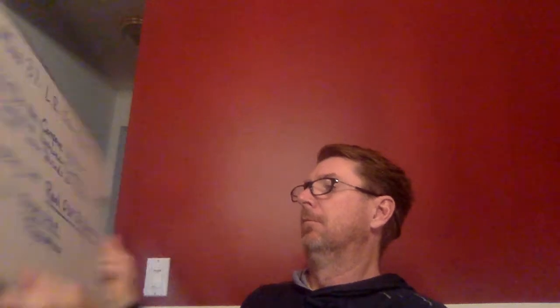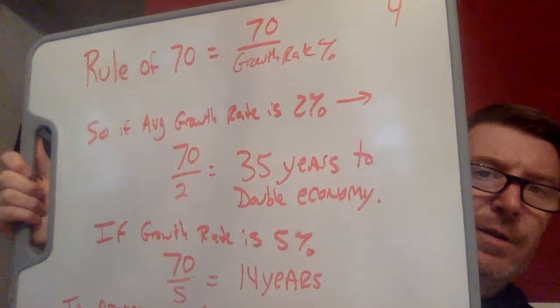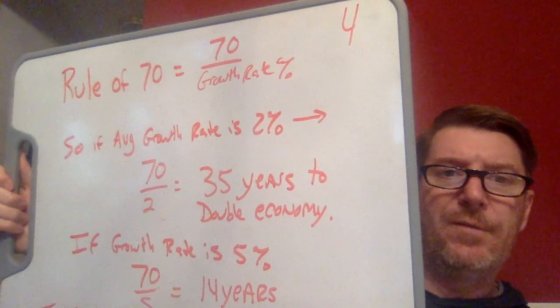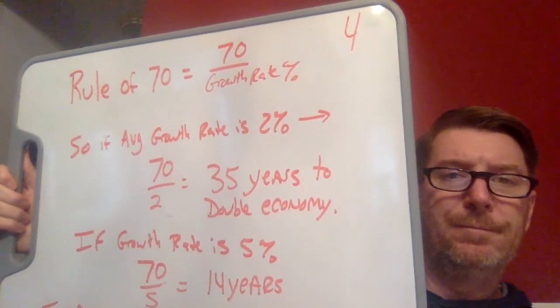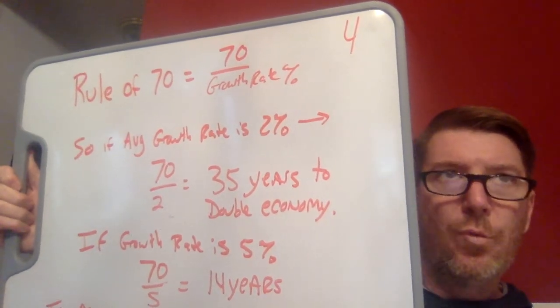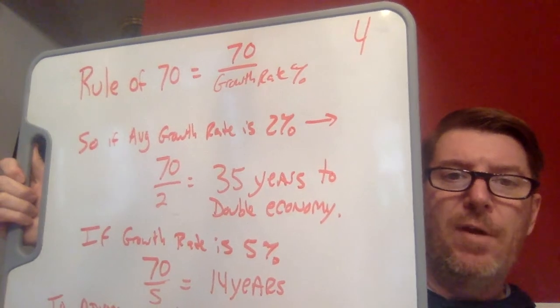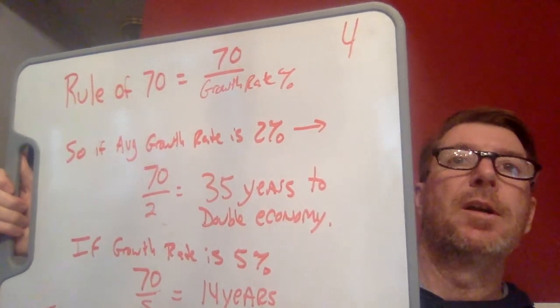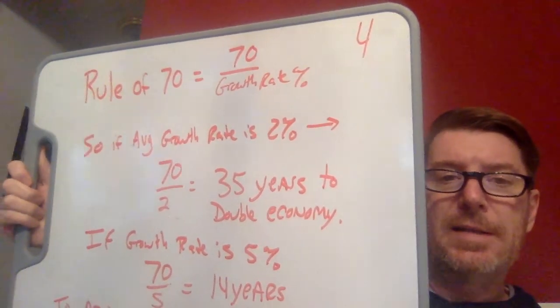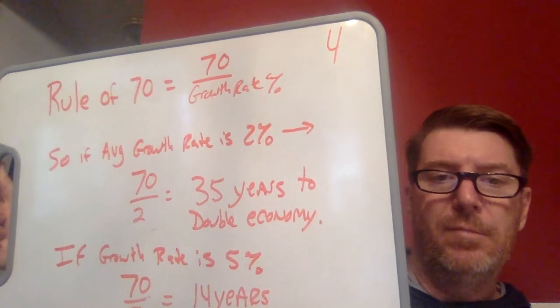The rule of 70 is a pretty easy calculation. The rule of 70 says you take the number 70 and divide it by your average growth rate. So if your average growth rate is 2%, meaning your GDP is growing by 2% year after year, you take 70 divided by 2, and the answer is it would take you 35 years to double your economy.